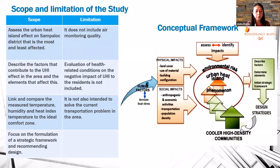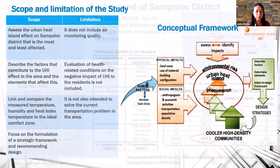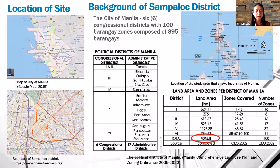This figure shows the conceptual framework for the study as the basis for identifying the impact of the problem and developing a strategic framework to reduce UHI effect. The city of Manila is divided into six congressional districts with 100 barangay zones composed of 895 barangays, with 17 administrative districts. District 4 with 17 zones is comprised of Sampaloc, described as a high density mixed residential and commercial area, also known as the University Belt.